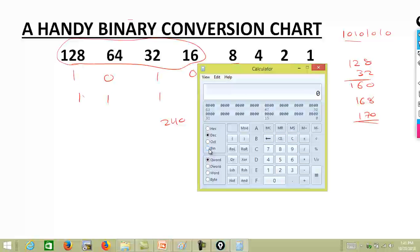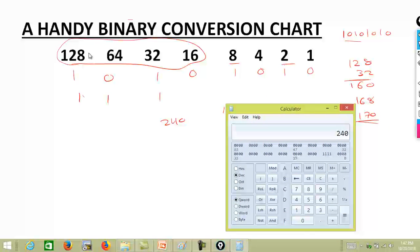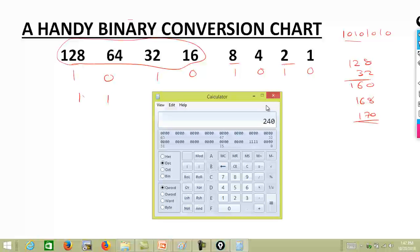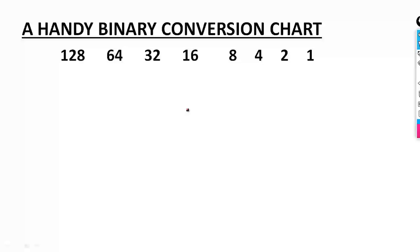So with that, we've seen how to convert from binary to decimal. Now let's see how we convert from decimal to binary. Given any number, say 200 in decimal, convert it to binary.